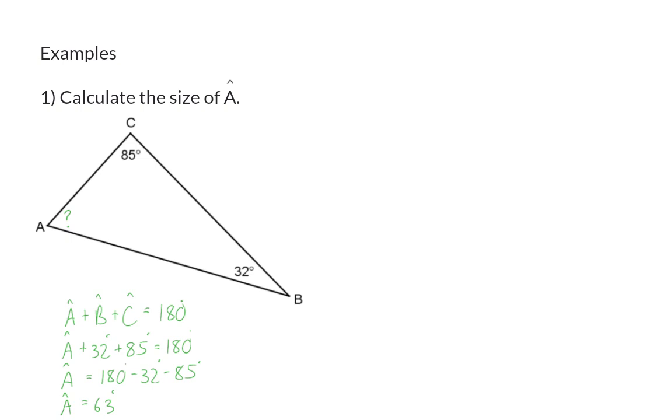In geometry it is important to always supply a reason for what you are doing. So you need to tell us which property or theorem you are using. In the line where I said the three angles add up to 180 I need to now say that I used the interior angles of a triangle.